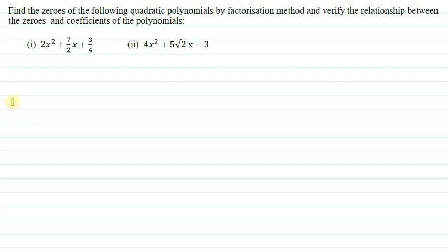Hello everyone, I am the teacher for this question. The question is: find the zeros of the following quadratic polynomials by factorization method and verify the relationship between the zeros and coefficients of the polynomials. We have to write the relationship method and verify the relationship.